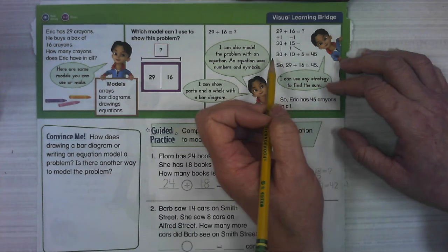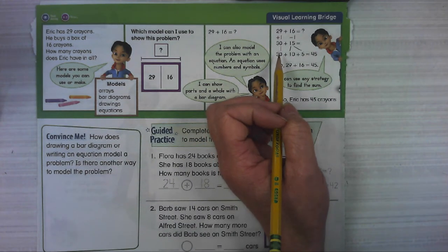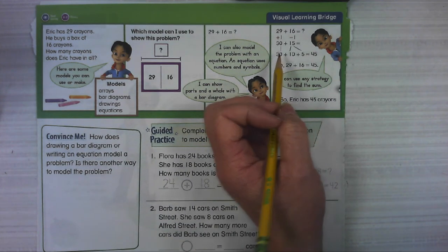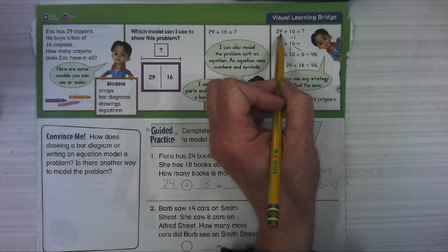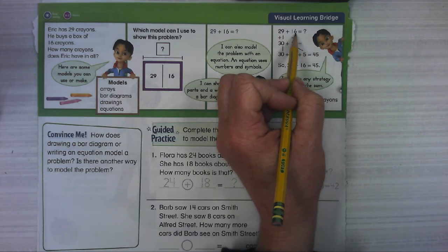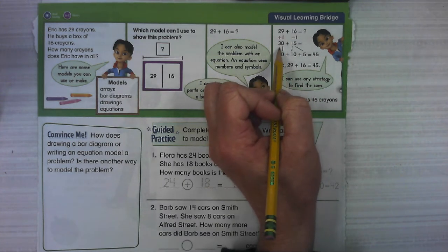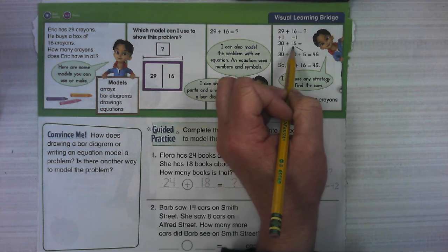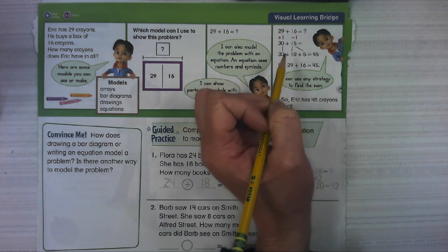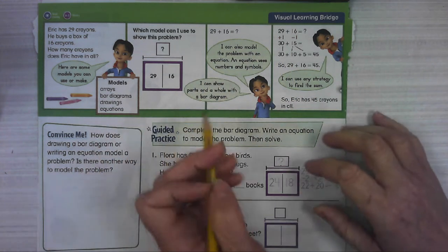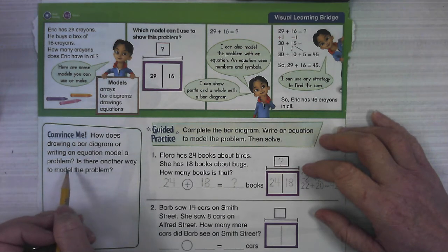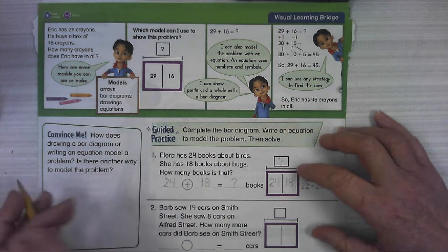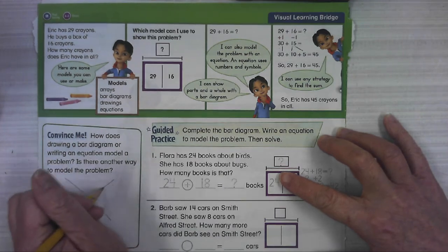29 plus 16. They're using the compensation strategy which we haven't talked about in a while but they're gonna add one to this 29. They're gonna take one of them away from 16 to make the 29 into 30. So 30 plus 15 might be an easier problem to solve. Let's just not do the convince me for this one.